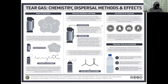So, tear gas — what does it do? Tear gas is a chemical. It is called CS gas. The chemical name is chlorobenzylmalononitrile.